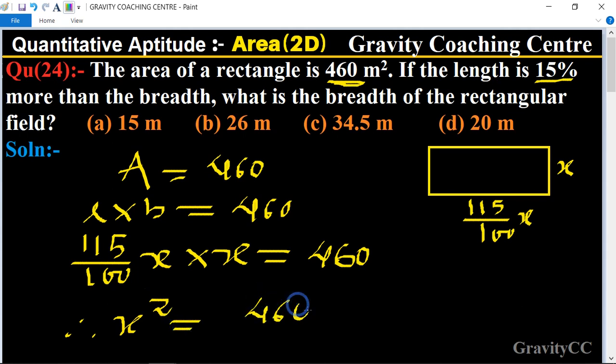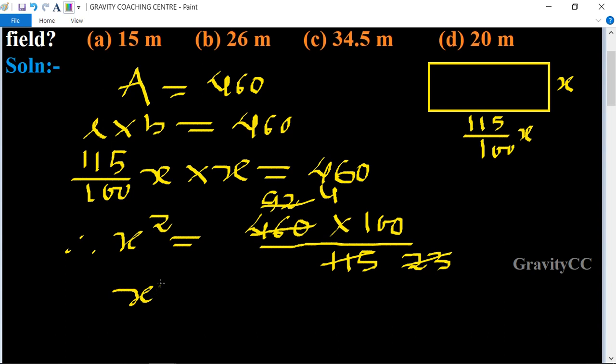460 multiply 100 upon 115 and cancel by 5, so 5 into 10 and 5 into 15, 9 into 45 and 92 and 23 into 92, so X square equal to 400, so X equal to root